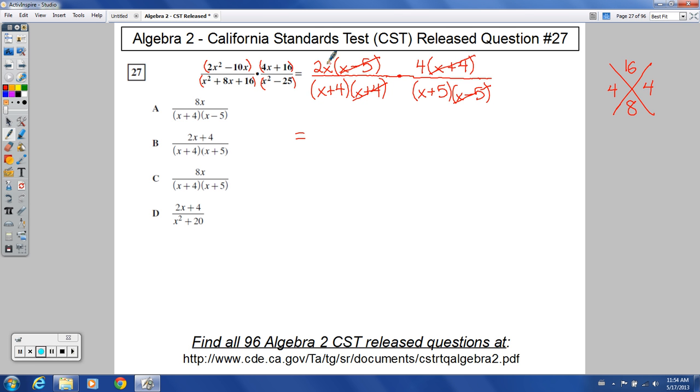So what do we have left? I've got 2x times 4 on the top, that's 8x. And then on the bottom, I've got x plus 4 times x plus 5. It looks like they probably left it in this form. Let's see if that matches up with what I got. Sure does. Number 27 should be choice C.